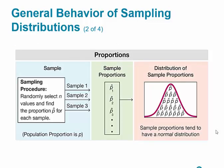In this illustration, we take our sampling procedure — randomly selecting n values with sample size n — and find the proportion p-hat for each sample. We take sample 1, 2, 3, and so on. When we take those sample proportions and graph them, the distribution of the sample proportions will follow a normal curve. Sample proportions tend to have a normal distribution.